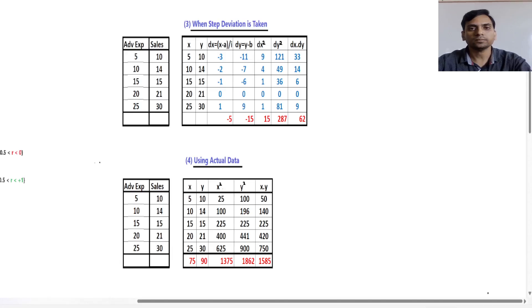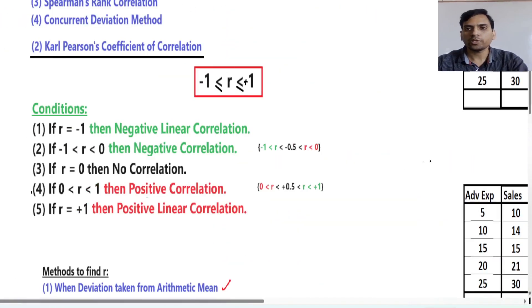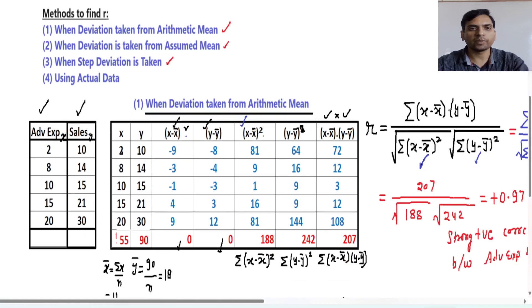Hello everyone. In last lectures I taught how to find R, the Pearson coefficient of correlation, by using deviation taken from arithmetic mean and when deviation taken from assumed mean. Now in this lecture we will see how to find R when step deviation is taken. The first two methods were: deviation taken from arithmetic mean, and deviation taken from assumed mean. Now we are seeing this third one, when step deviation is taken.